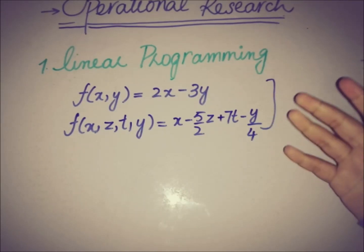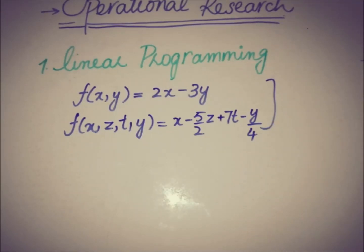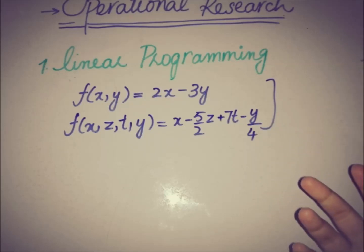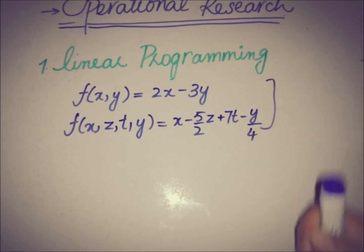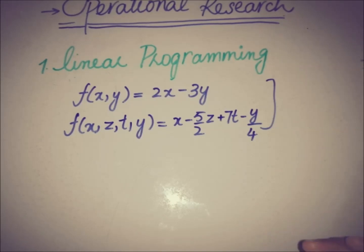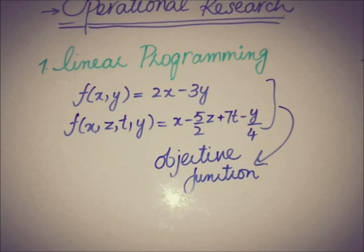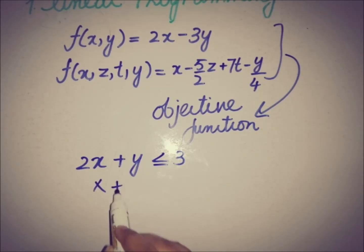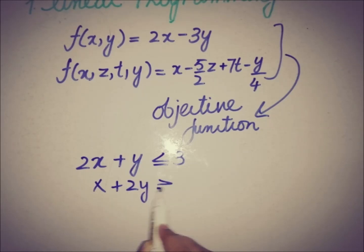In linear programming, these linear functions are called the objective function, because this function defines the objective of the problem. Linear programming is used to maximize or to minimize this linear function with the help of some limitations, which we call constraints. We express constraints with equalities or inequalities — for example, 2x + y ≤ 3, or x + 2y ≥ 4.